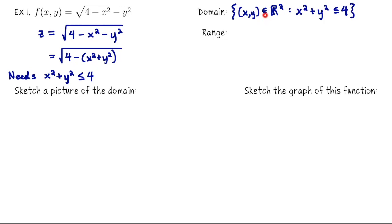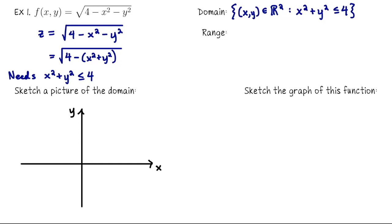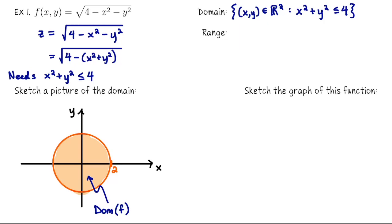The symbol that looks like a funny E means 'is an element of,' so the domain is all (x,y) pairs in R² such that the sum of their squares is less than or equal to 4. The set of points in the xy-plane satisfying x² + y² = 4 is a circle of radius 2. We're looking for points where x² + y² ≤ 4 — checking the origin confirms we want the inside of the circle. So our domain is a solid disk of radius 2.